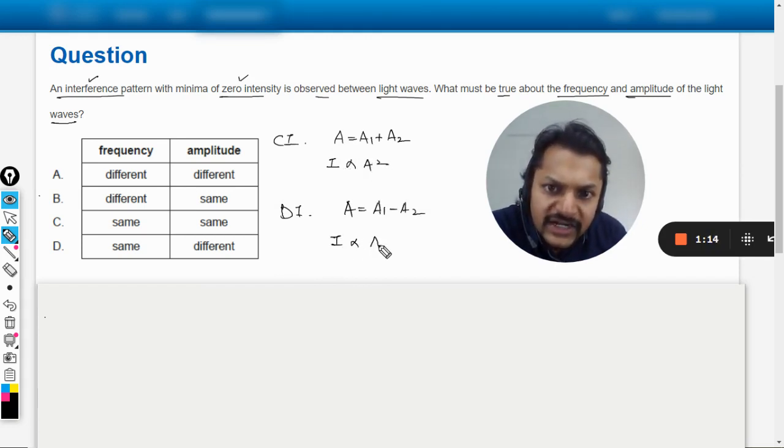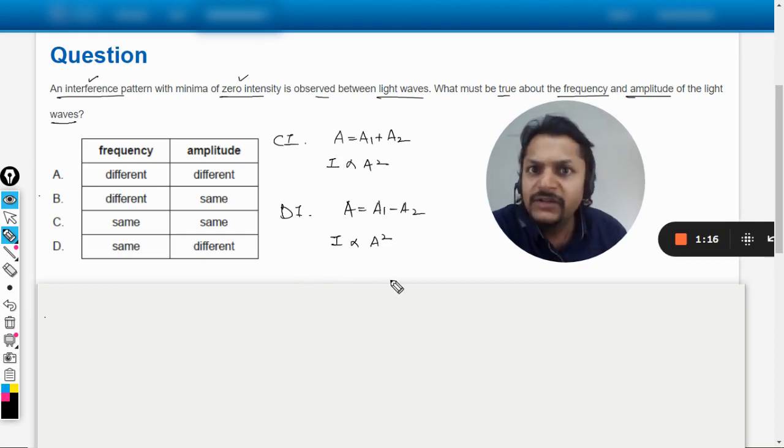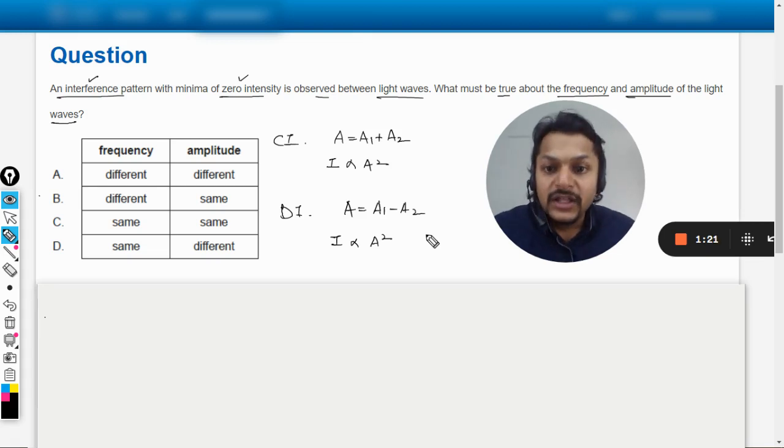It means that if A₁ is not equal to A₂, the dark points will not be actually dark - they would be having some light there, but it will not be black in color. But if we want it to be black in color, these two amplitudes have to be equal to each other.